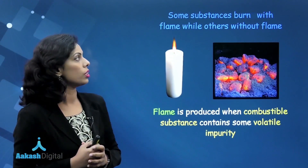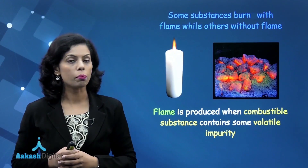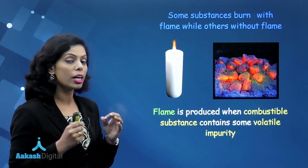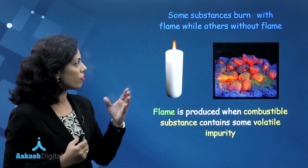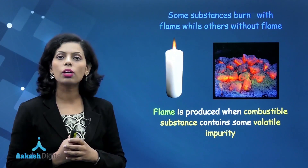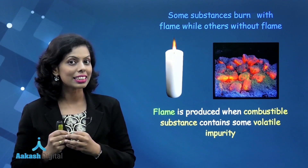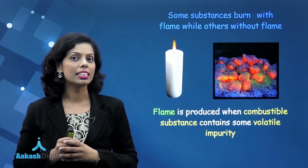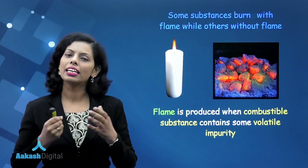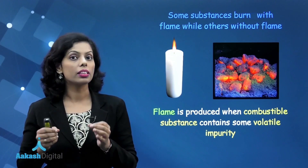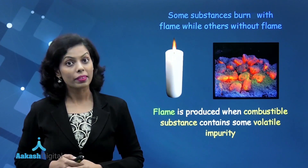We discussed that some substances produce a flame while some do not. For example, a candle produces a flame while charcoal does not. The reason is that if a substance contains volatile impurities, it will produce a flame; if not, there is no flame production.